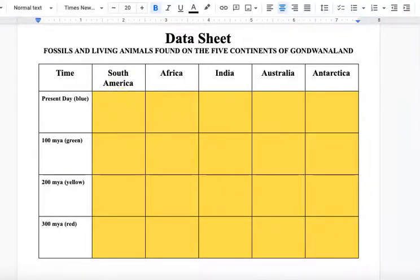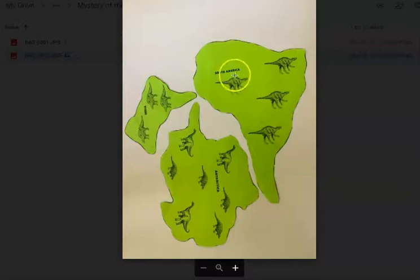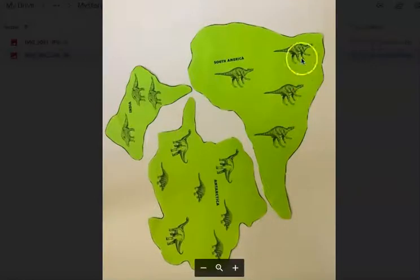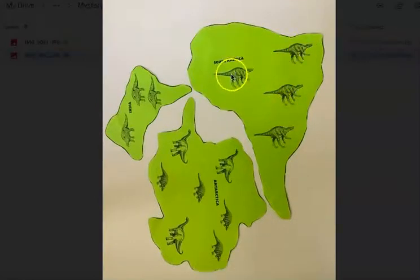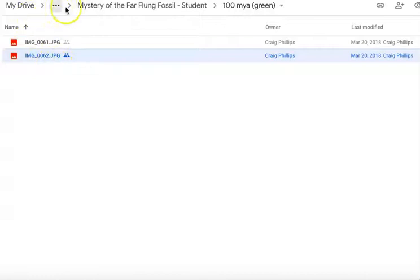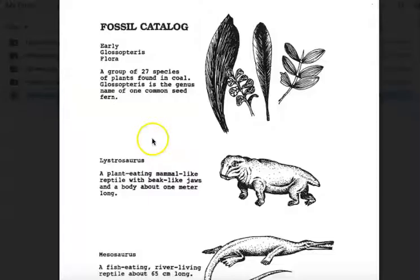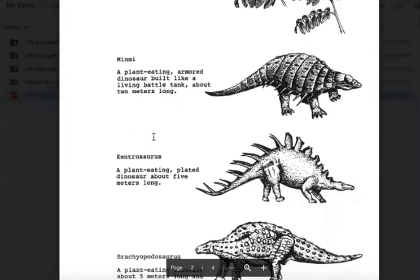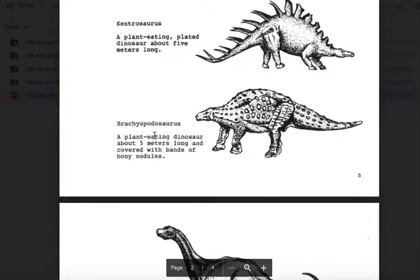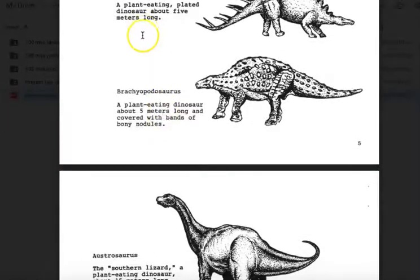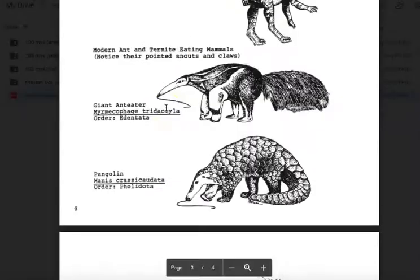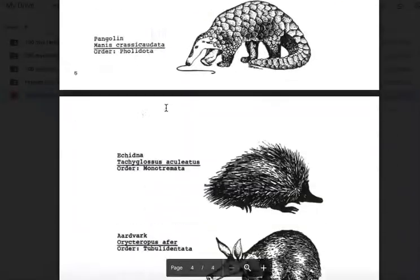So if I go back here and I see South America, I see this fossil evidence. You can always zoom in if you want and get closer. What you have to do is record in South America what this creature is. The way that you find that is you go back to the fossil catalog, and you're going to look for a picture that matches up.